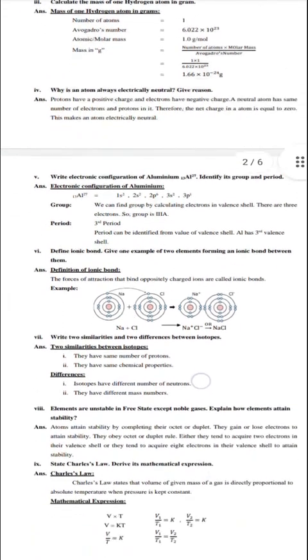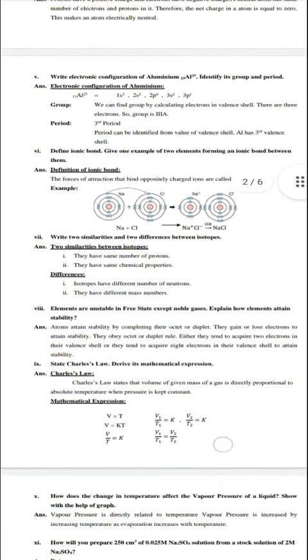Question number 5: Write electronic configuration of aluminum, identify its group and period. First we write the electronic configuration of aluminum. Aluminum's atomic number is 13, so electronic configuration is 1s2, 2s2, 2p6, 3s2, and 3p1. We also have to identify group and period. Group can be found by calculating electrons in valence shell. The valence shell has 3 electrons (2 plus 1), so group number is 3. Period can be identified from the value of valence shell, which is 3, so period is also 3.